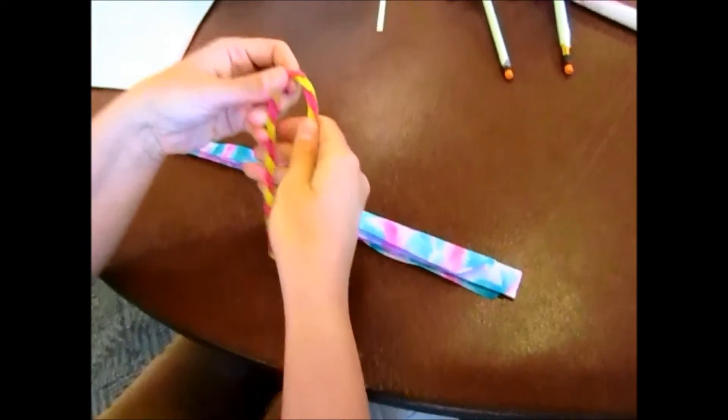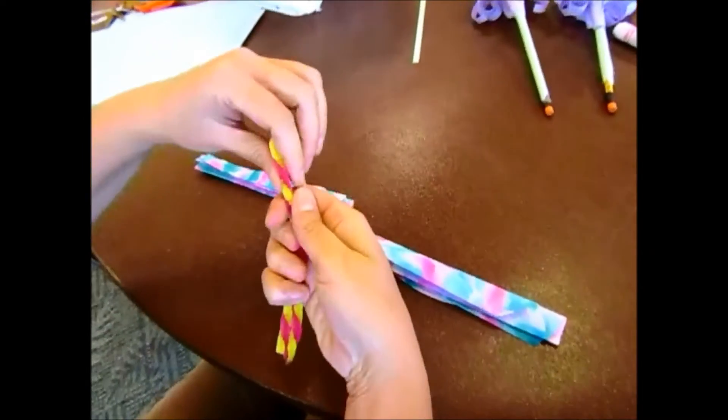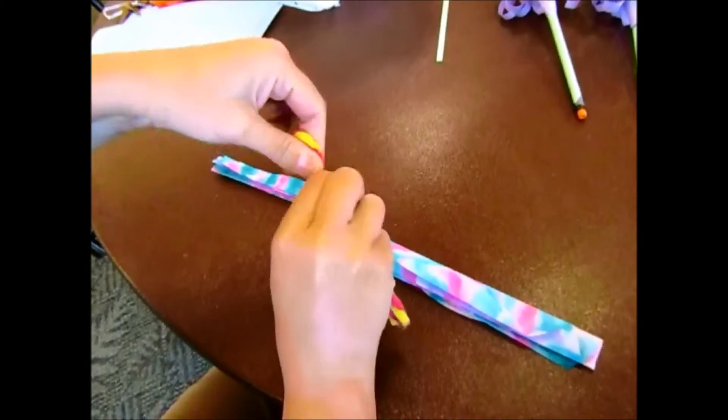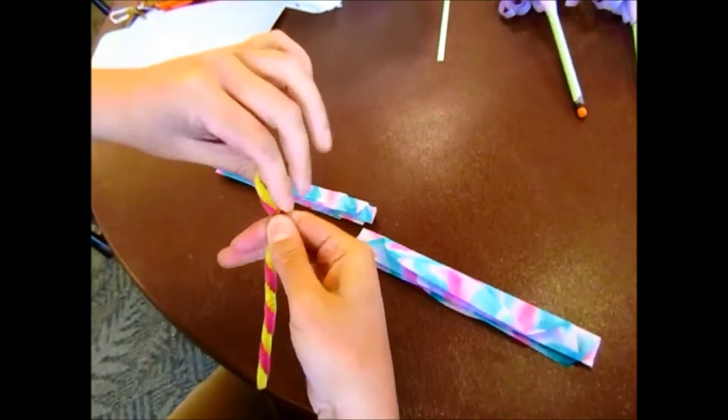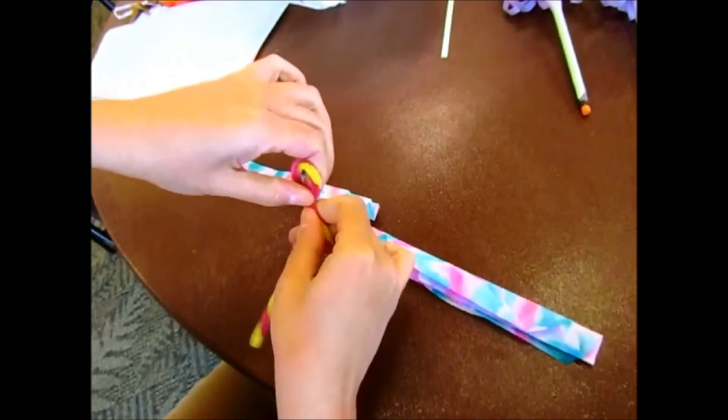you're going to go ahead and take your chenille stem or pipe cleaner, fold that in half, and twist the end so that there's a little loop on there. That's going to be the head of the butterfly.